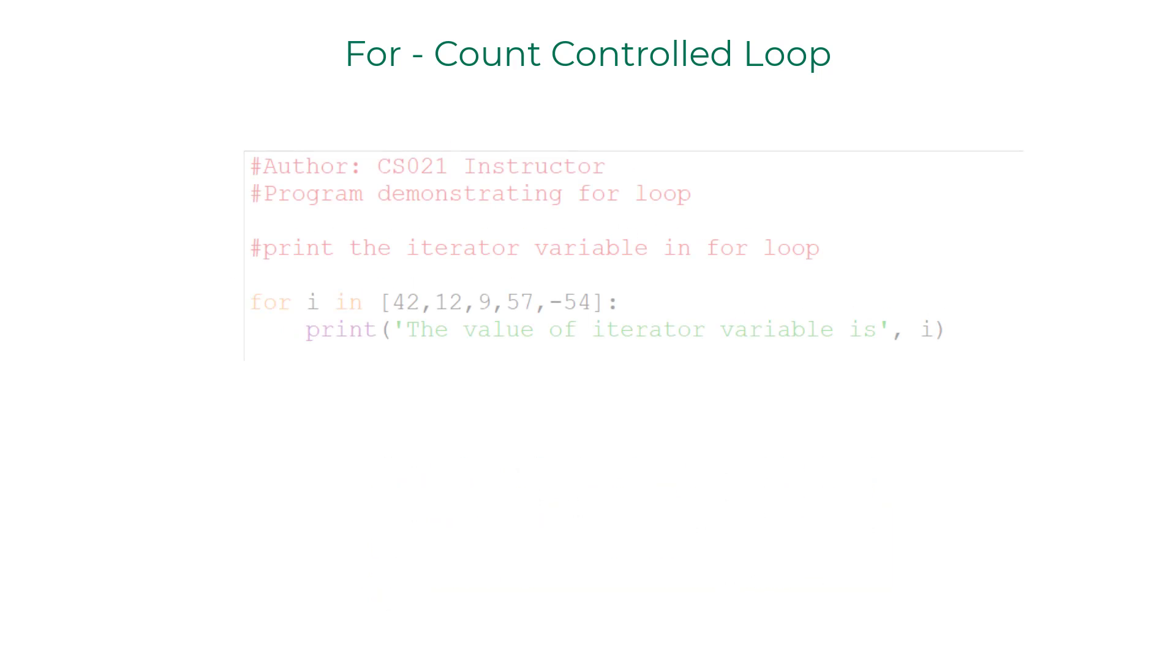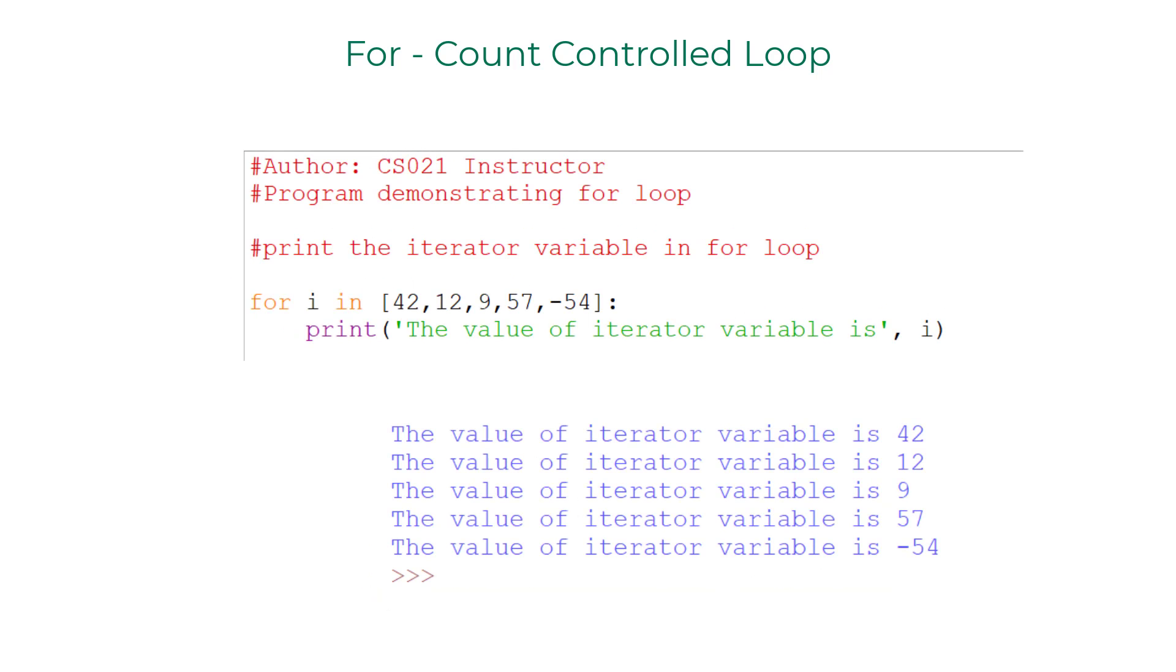Now let me change the values in this list and show you what happens. Clearly the iterator variable picks the values in the list sequentially and the print statement displays the value.